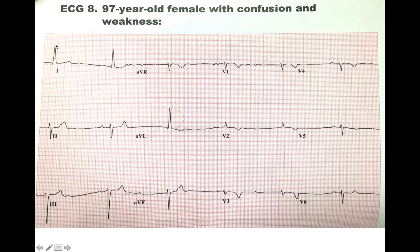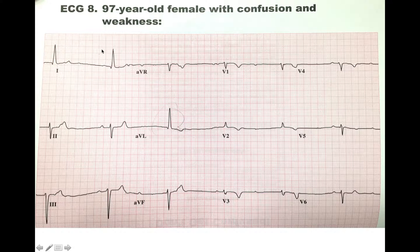Let's start with this complex using the shortcut rule. Starting with the big boxes: 300, 150, 100, 75, 60, 50. You can see that the next QRS complex is definitely after 50, so this is less than 50 beats per minute. This would indicate bradycardia for sure.